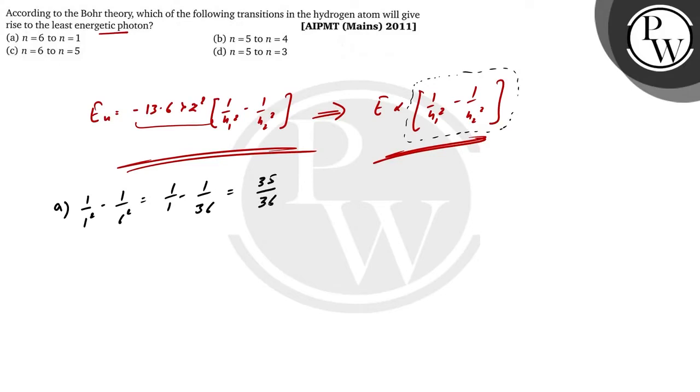35 upon 36. If we talk about option B, then 1 upon 16 minus 1 upon 25. This is 1 upon 4 squared is 16, minus 1 upon 5 squared is 25.